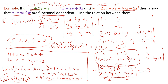So if these functions are dependent, there exists a relation between them. There are many methods to establish such a relation — you can find the values of x and y and substitute. The key thing to remember is: if we have three functions u, v, w and they are dependent, then we can always establish a relation between them.